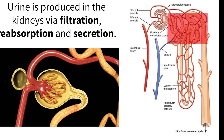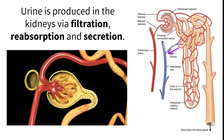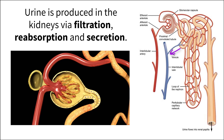Examples of secreted substances include uric acid, biopigments, ammonia, drugs, and other chemical toxins. The deoxygenated, cleaner blood in the paratubular capillary leaves via the interlobular vein which connects back to the renal vein.